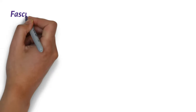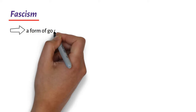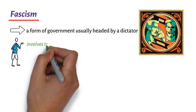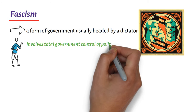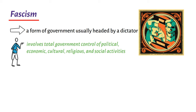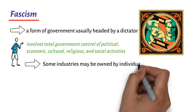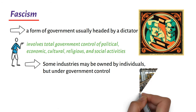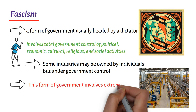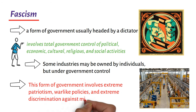On Fascism. Fascism is a form of government usually headed by a dictator. It involves total government control of political, economic, cultural, religious, and social activities. Some industries may be owned by individuals, but under government control. This form of government involves extreme patriotism, warlike policies, and extreme discrimination against minority groups.